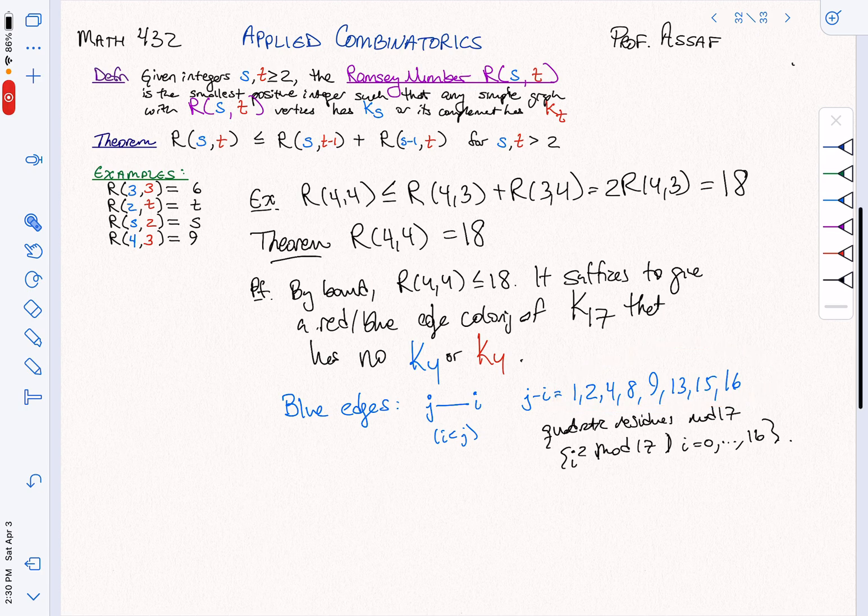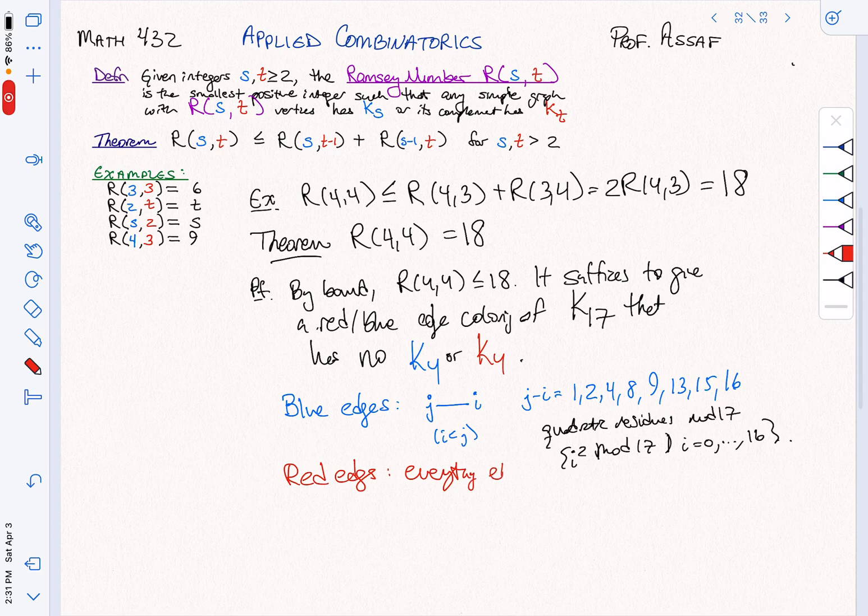that if you take these for the blue edges, any collection of four of these numbers, there's going to be a missing edge between them. And the red edges are exactly everything else. So maybe that's worth saying. Red edges, everything else.